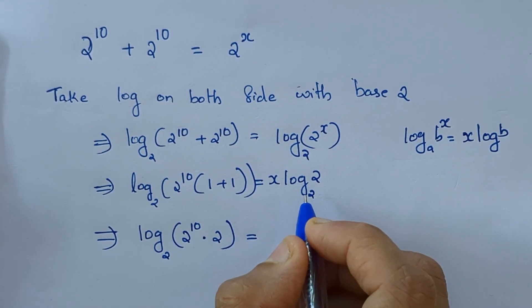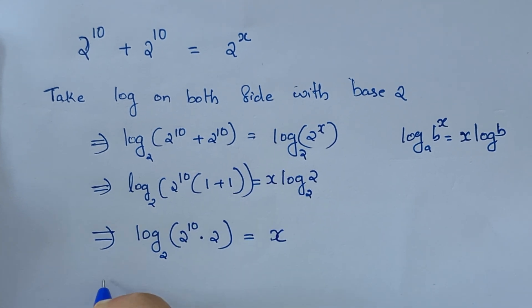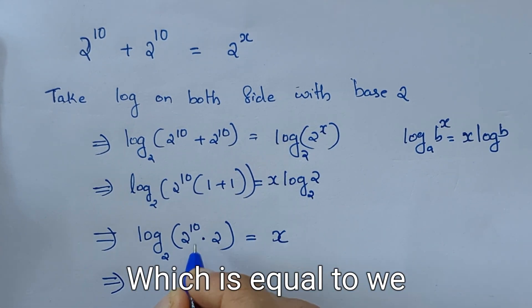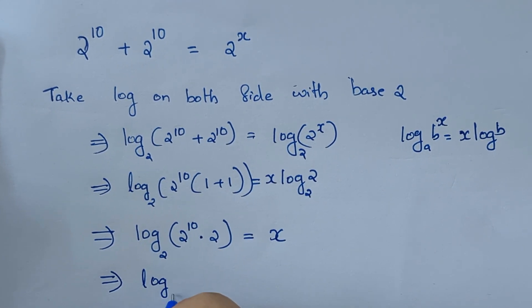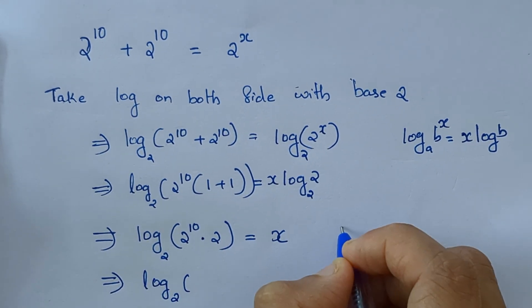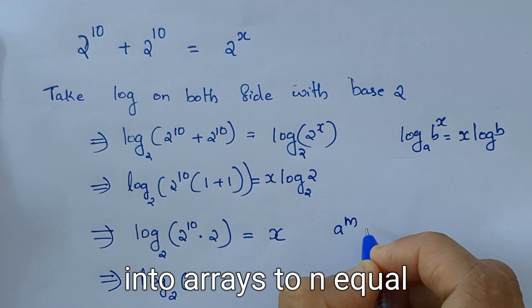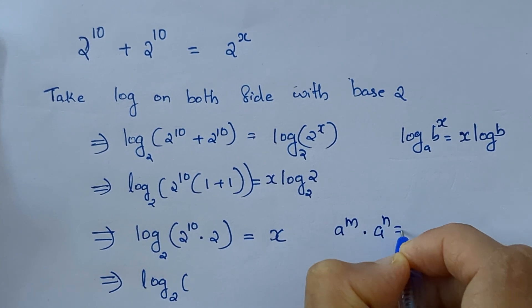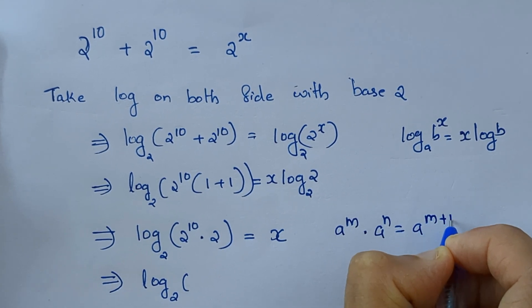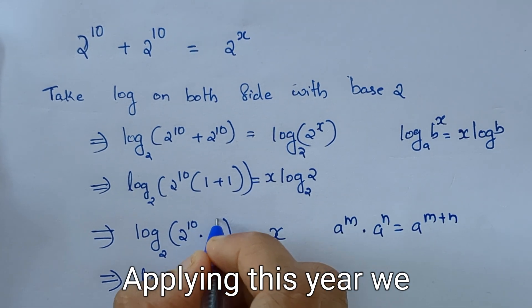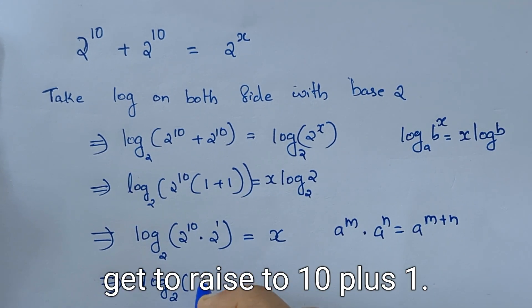We know a raised to m into a raised to n equal to a raised to m plus n. Applying this here we get 2 raised to 10 plus 1.